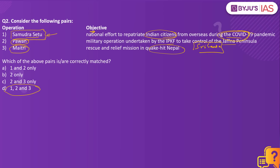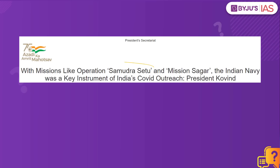Then we have Operation Maitri, which happened in 2015 in Nepal. A big earthquake struck Nepal, and India provided all the resources required. The operation to support Nepal was called Operation Maitri — reflecting the friendship relationship that was enhanced during this process. We took this practice question because this article makes a mention of Operation Samudra Setu.